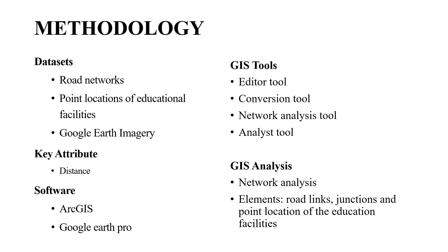In methodology, the datasets used include road networks, point locations of education facilities, Google Earth imagery, and key attribute distance. The software used was ArcGIS and Google Earth Pro. GIS tools used were the editor tool, conversion tool, network analysis tool, and analyst tool. Network analysis elements included road links, junctions, and point locations of the education facilities.